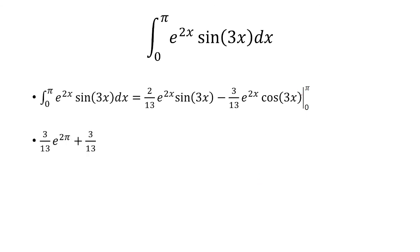So if I plug in pi, I end up with 3 over 13 e to the 2 pi. If I plug in 0, I have negative 3 over 13. Subtracting them, the negative 3 over 13 becomes positive. And so I have 3 over 13 times the quantity e to the 2 pi plus 1.